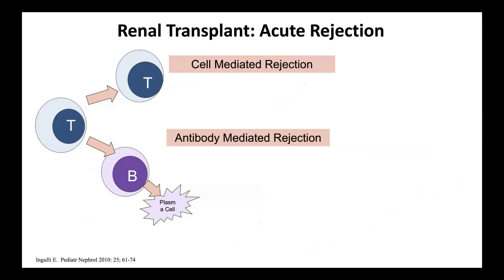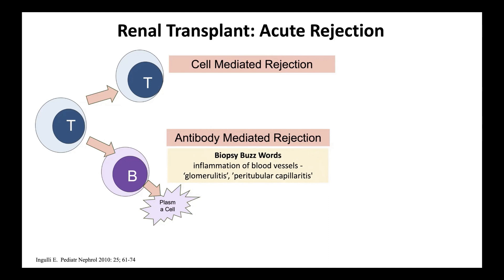You can get cell-mediated rejection or antibody-mediated rejection, and both can be acute or chronic. For acute antibody-mediated rejection, the biopsy buzzwords are inflammation of the blood vessels — things like glomerulitis and peritubular capillaritis. This makes sense because antibodies bind to their antigen from inside the blood vessel. You must also identify a donor-specific antibody in the serum to make this diagnosis.